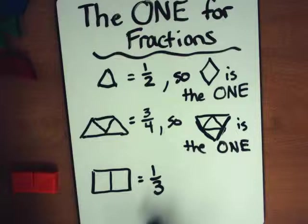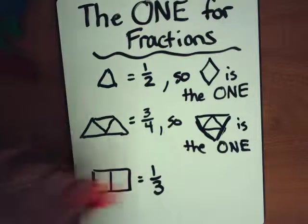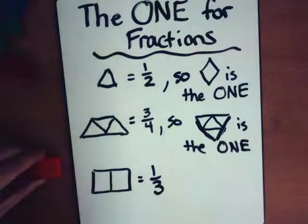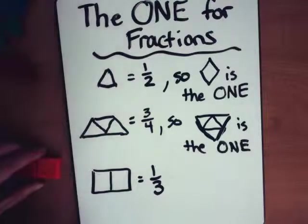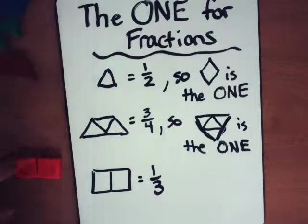So how many is our whole broken into? Three pieces. So one-third is two squares. How many thirds do we have for a whole? Three-thirds for a whole.